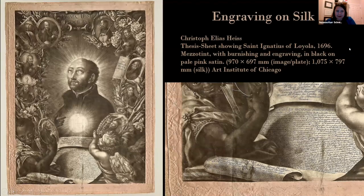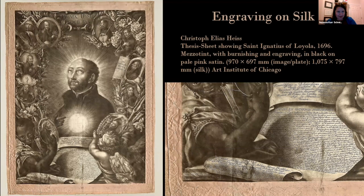Here's something I helped buy for the Art Institute of Chicago when I worked there — it's enormous. You'll see that this whole section down here is separately engraved, although most of it's mezzotint. This is basically the summary of a doctoral thesis. The idea was that if you printed your thesis fancily enough, in this case on this pink satin silk — originally with brocade around the edges — perhaps St. Ignatius would take pity on you and help you graduate.